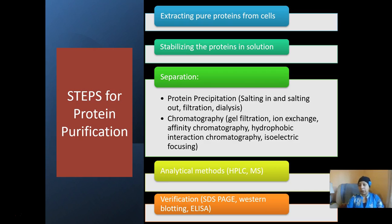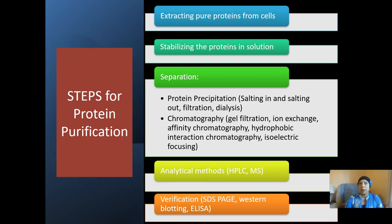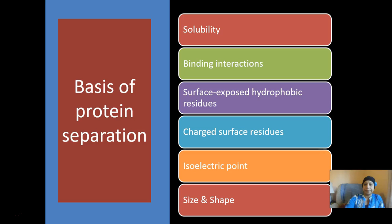For verification purposes we typically use a combination of gel electrophoresis and some antibody-based methods like westerns or ELISAs to make sure that we have the proteins that we want. So what can we use to separate our proteins? There are several different properties of proteins that we can use to isolate the ones we care about.